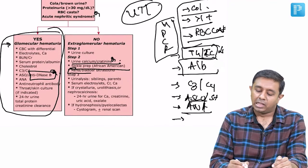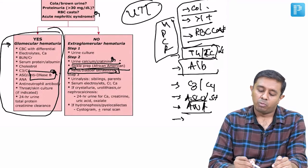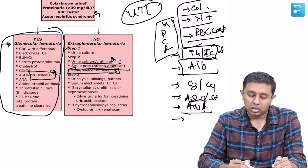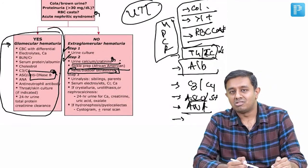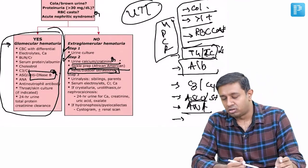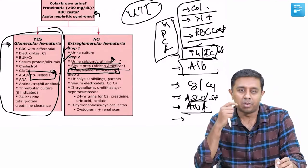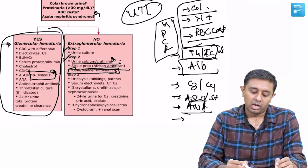By now, renal ultrasound or KUB we would have already done. Step one would be culture. Step two would be the second set of investigations: calcium creatinine ratio, ultrasound of the kidneys, and sickle cell preparation - hemoglobin electrophoresis.